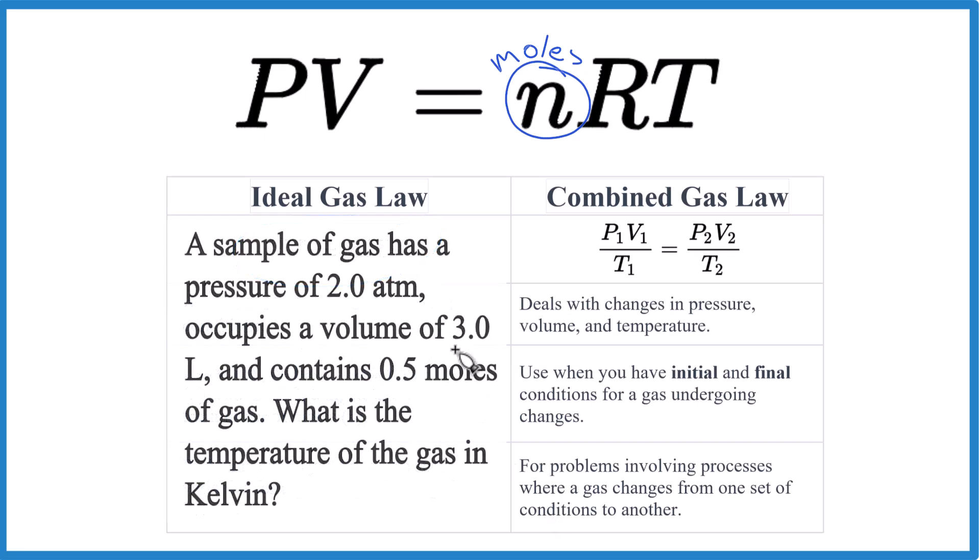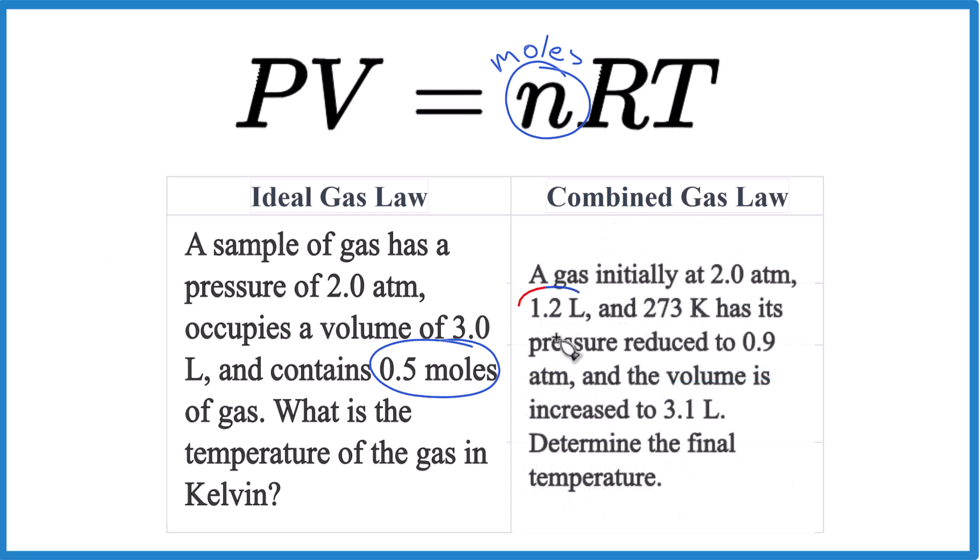Right here in this problem, we have moles. But if you have an initial and a final condition, like you have a temperature or a pressure that changes, like this problem where the volume changes and then we have the pressure here changing, that's going to be the combined gas law. So if you see moles, you're thinking PV equals nRT, and if things change, you're thinking combined gas law. That's how you know.